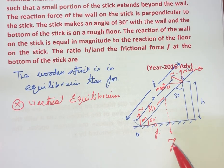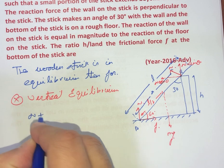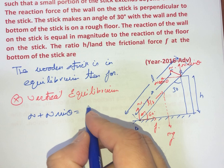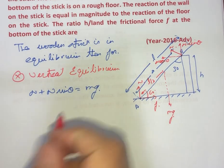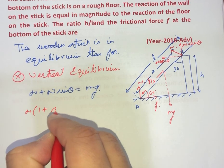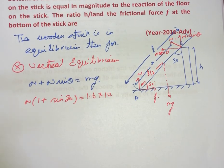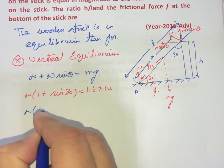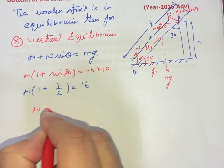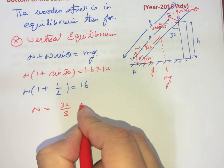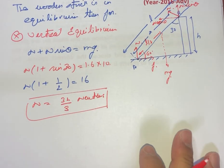We have two forces N, N sin theta and mg. In the upward direction we are having N plus N sin theta. So we can say N plus N sin theta in the downward direction is mg. Taking N as common and substituting the values, we get N times 1 plus sin of 30. And it is given as 1.6 multiplied by 10. So from here, sin theta is 1 by 2, so this will be 16. And we can say that N will be coming equal to 32 divided by 3 newtons.